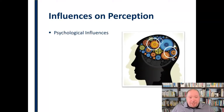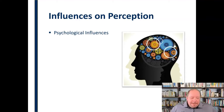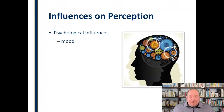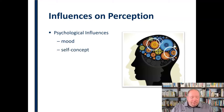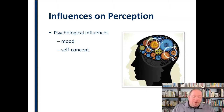Additionally, we have psychological influences. These are different from physiological ones — for example, ADD and ADHD are physiologically based, involving chemical imbalances. Psychological influences include things like our mood: sometimes we just wake up on the wrong side of the bed, and that affects how we view things and how we take things. Our self-concept is also a psychological influence — if we feel good about ourselves, we'll take something one way; if we have doubts about ourselves, we'll handle a situation very differently.